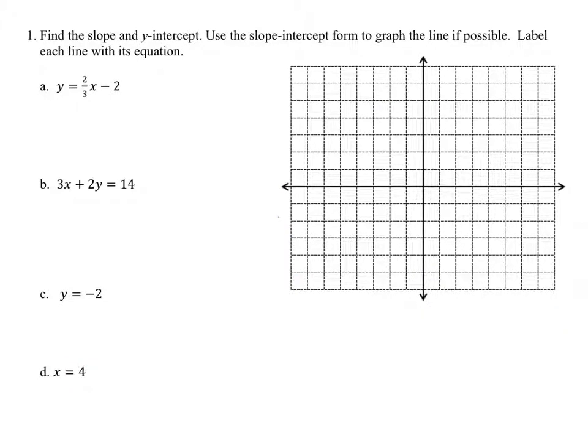Now what we're going to do is we're going to find the slope, find the y-intercept, and then we are going to graph and label each line. So for this first one, the slope is equal to 2 thirds. The y-intercept is going to be 0, negative 2.